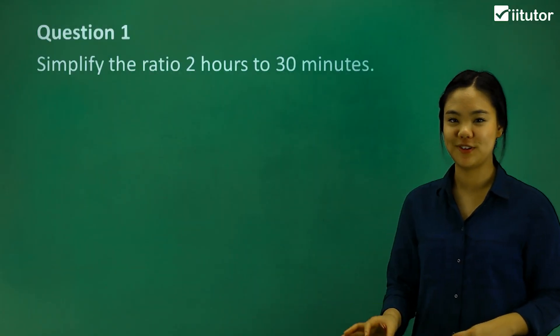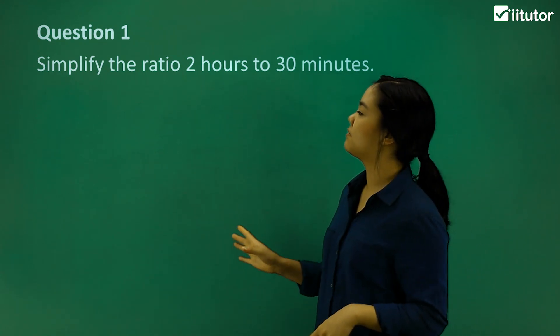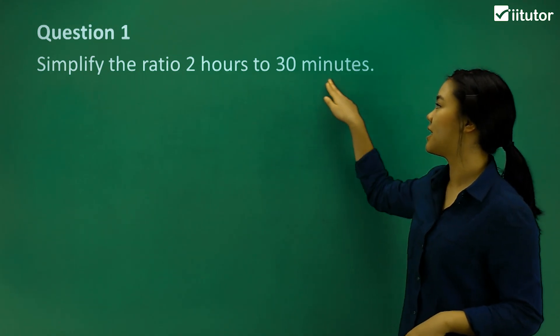So simplifying ratios with different units. Let's have a look at question one. Simplify the ratio 2 hours to 30 minutes.